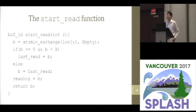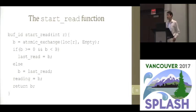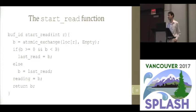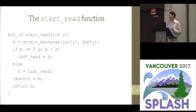Here's some example code from the core functions that we provide — the start-read function. You can see a reader, when it wants to read, first does that atomic exchange operation on its location buffer, getting a new buffer to read. If what it receives is actually a data buffer index, then it records it; otherwise, it just goes back to reading whichever index it had most recently received. This is the case we expect to hit when the reader runs faster than the writer and reads its own empty. Then it returns that index, whether it's the newly received index or the old index.